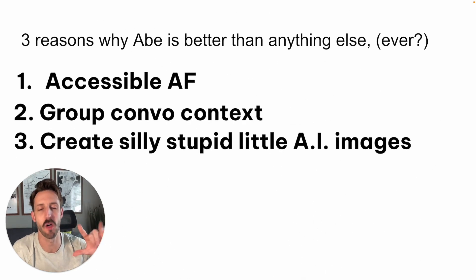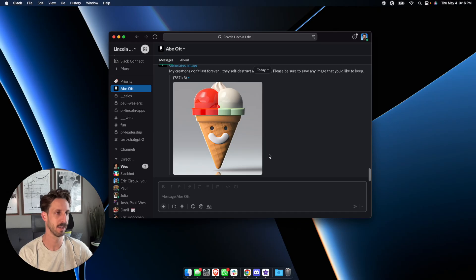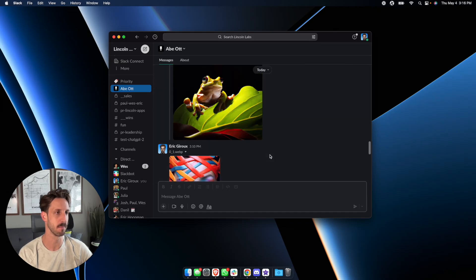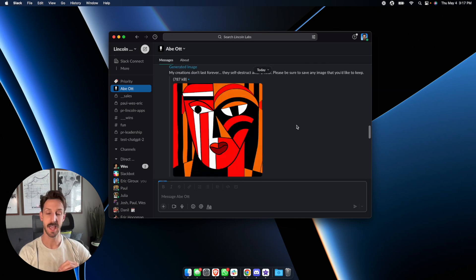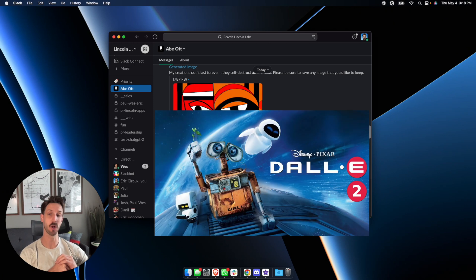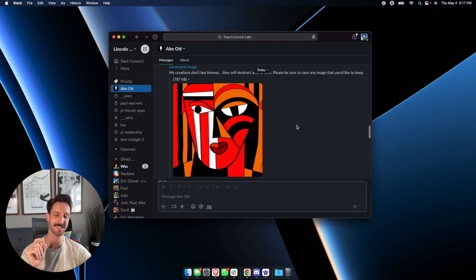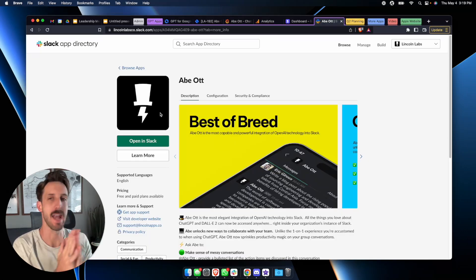And the third reason why you need to install Abot now is it allows you to create those little AI images you see everywhere. Look at this, I got ice cream cones. We got buildings, tree frogs, fishies, whatever. Just have fun. Abot is fully integrated with OpenAI's DALL-E 2. Spice up your group conversations with custom AI-generated images from Abot. Download it now.